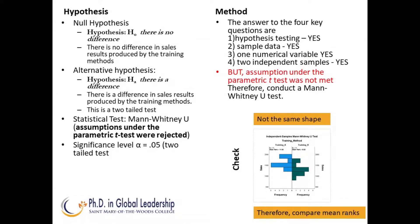Now that we have reviewed Mann-Whitney-U in Excel, let's start the process in SPSS. First, review the null hypothesis and the alternative hypothesis. We can use the Mann-Whitney-U test because it passed all our questions, and we are assuming that the parametric t-test was rejected because one of the assumptions was not met. After meeting the methods questions, we can look at a histogram to see if the two groups have the same shape. If they do not, it means that we will be comparing the mean rank and not using the medians.